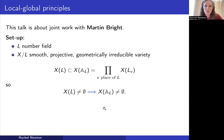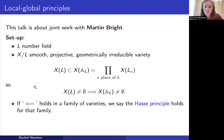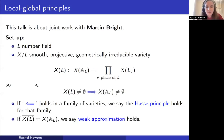The question is, what about going the other way? If I have points everywhere locally — meaning points over all these completions of L — do I actually have to have a rational point on X over L? If so, then we say the Hasse principle holds. This is the first example of a local-global principle. For example, the Hasse principle holds for varieties cut out by quadratic forms — that's the Hasse-Minkowski theorem.